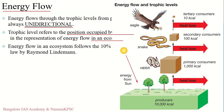The laws of thermodynamics state that whenever there is transfer of energy from one system to another, the process is never 100% efficient — there is always loss of energy, usually in terms of heat. Therefore, as you move from one trophic level to another — from primary producers to herbivores to carnivores — there is always loss of energy, and the amount available at a higher level is always reduced.